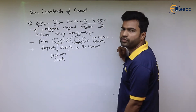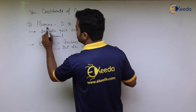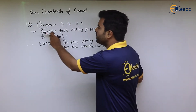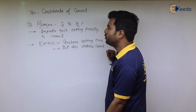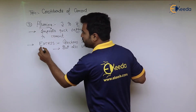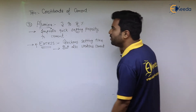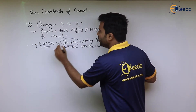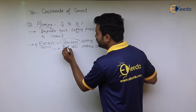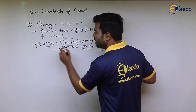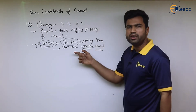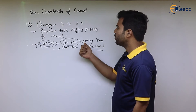The next constituent is alumina, with a percentage of 3 to 8 percent. Its function is that it imparts quick setting property to the cement. If alumina is provided in excess quantity, it will quicken the setting time of cement, but quickening the setting time also results in weakening of the cement. So care should be taken that alumina quantity remains between 3 to 8 percent.